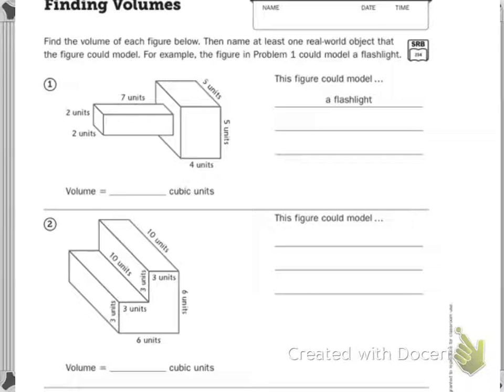Finding volume. Find the volume of each figure below, then name at least one real world object that the figure could model. For example, the figure in problem 1 could model a flashlight.